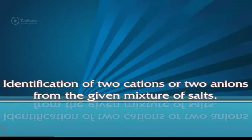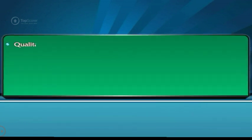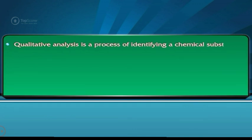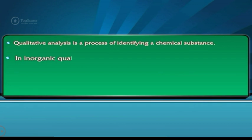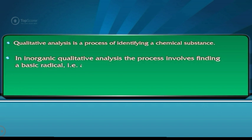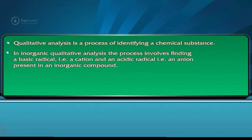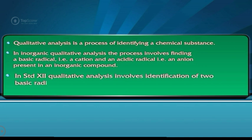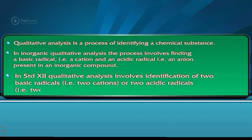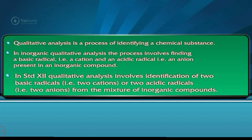Identification of two cations or two anions from the given mixture of salts. Qualitative analysis is a process of identifying a chemical substance. In inorganic qualitative analysis, the process involves finding a basic radical, that is a cation, and an acidic radical, that is an anion, present in an inorganic compound. In standard 12, qualitative analysis involves identification of two basic radicals, that is two cations or two acidic radicals, that is two anions, from the mixture of inorganic compounds.